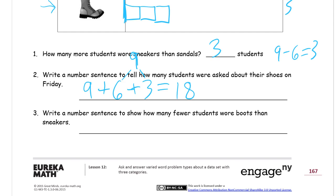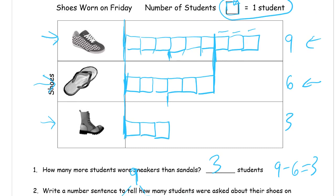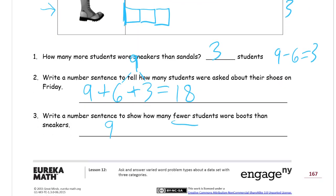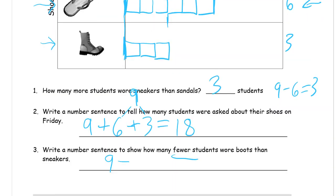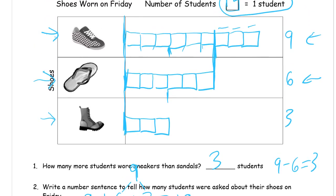Write a number sentence to show how many fewer students wore boots than sneakers. Fewer is the same as less. Boots had three students and sneakers had nine, so we want to find the difference. We're going to write nine minus three. You can pretend to cross out the three boots squares in the sneakers bar and count what's left: one, two, three, four, five, six. So nine minus three equals six.